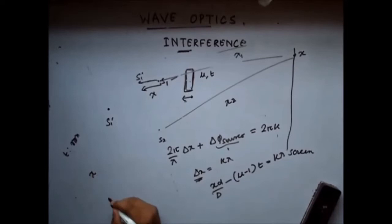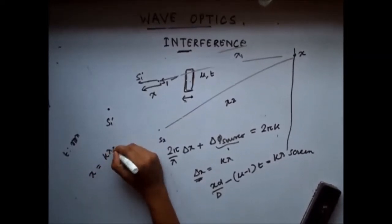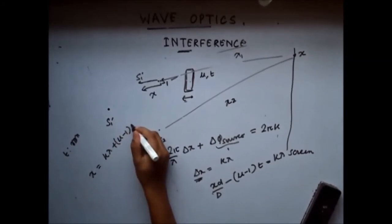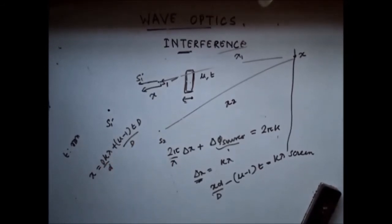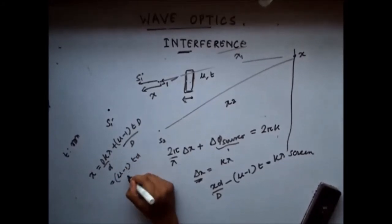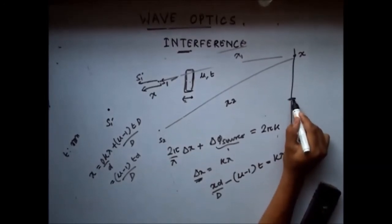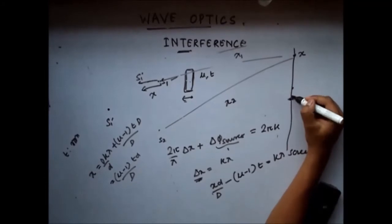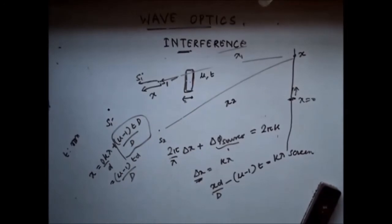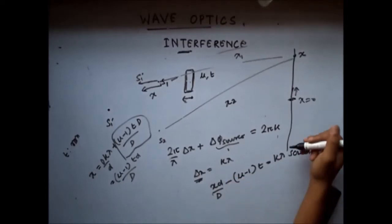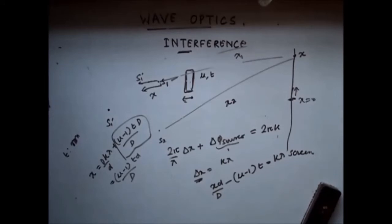Solving, I see that x is now shifted by a value involving D. So the first central maximum — when k equals 0 — no longer occurs at x equals 0. The first maxima has shifted in the upward direction. Similarly, all the maxima get shifted by this amount. The effect of the introduction of the glass slab is to introduce a shift in the whole interference pattern; the whole interference pattern has shifted upward by this amount.